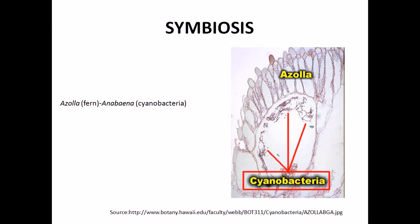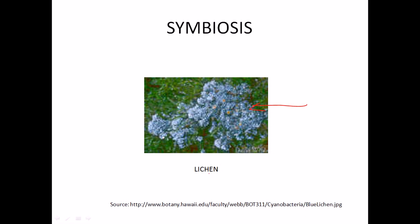Another important symbiosis involves lichens. Lichens form through the interaction of fungi with algae — in this case, cyanobacteria act as the algal partner. Cyanobacteria can interact with different fungi to produce lichens, which are really important for maintaining the balance of biotic and abiotic factors in the environment.